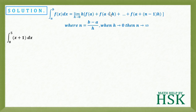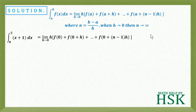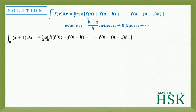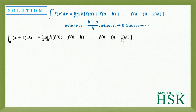The key to solving this is calculating the sum in a systematic manner. Applying this formula, we write the integral as limit h→0 of h times [f(0) + f(0+h) + ... + f(0+(n−1)h)], since the lower limit a is 0.